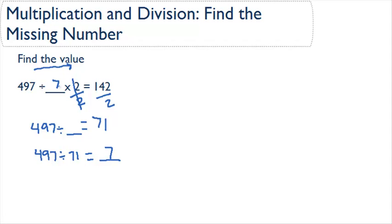497 divided by 7 is equal to 71 times 2 is equal to 142. So our correct answer is 7.